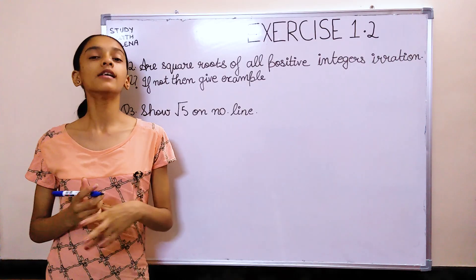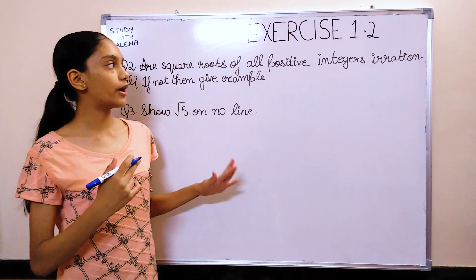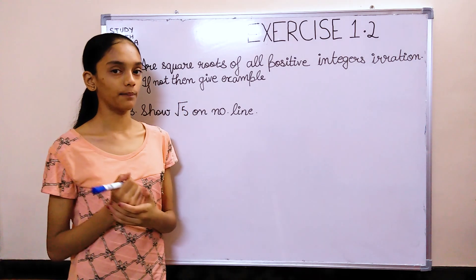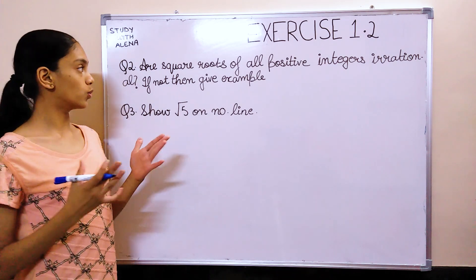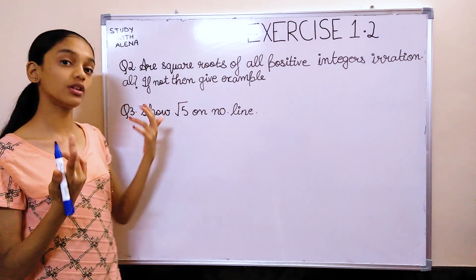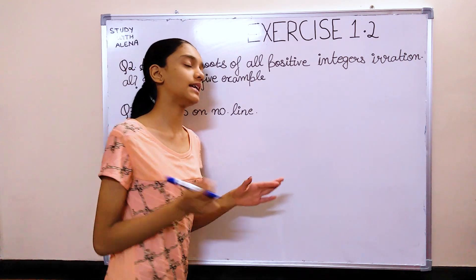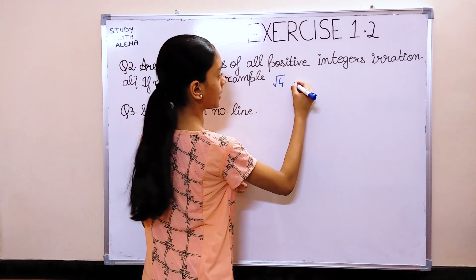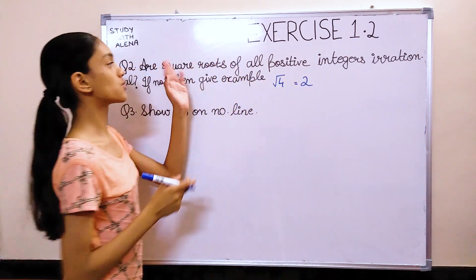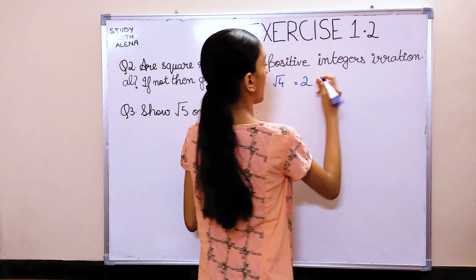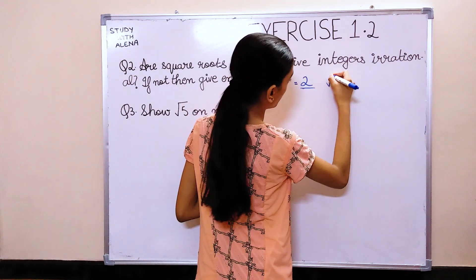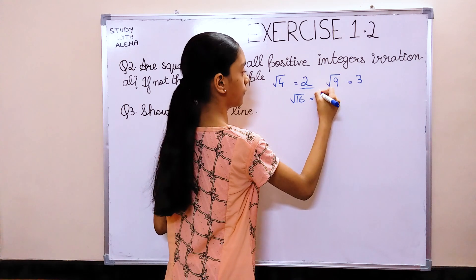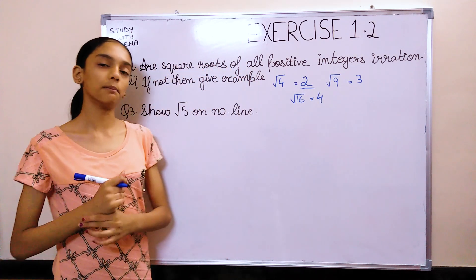Now, let's move on to the second question. The second question says, are square roots of all positive integers irrational? If not, then give an example. Now, not all square roots of positive integers are irrational. They are rational also. Like, we can take many examples. Like, if you say root 4, it is not irrational because it equals to 2. They are square root of a positive integer, and 2 is a rational number. You can take root 9, which is equal to 3. Root 16, which is equal to 4. So, like this, you can take many examples.